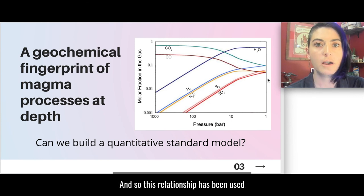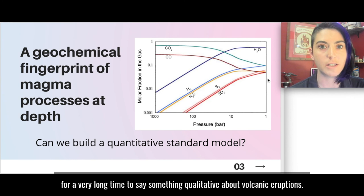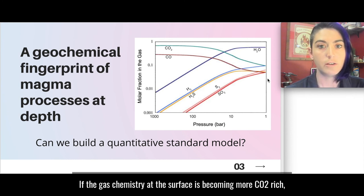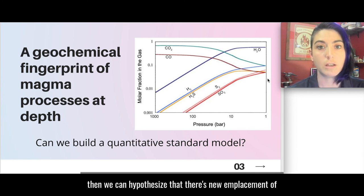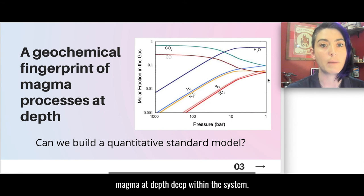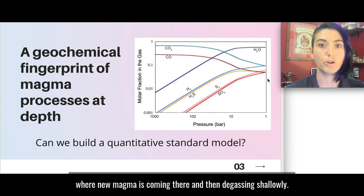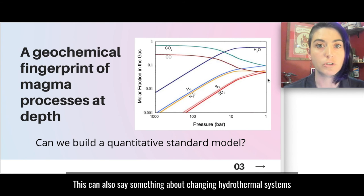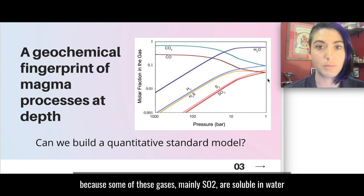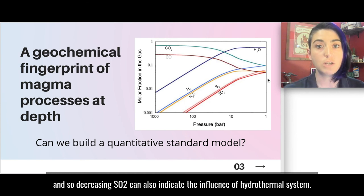And so this relationship has been used for a very long time to say something qualitative about volcanic eruptions. If the gas chemistry at the surface is becoming more CO2 rich then we can hypothesize that there's new emplacement of magma at depth deep within the system. Conversely if our SO2 to CO2 ratio is increasing we can say that we might be seeing some kind of infiltration of magma into the shallow system where new magma is coming there and then degassing shallowly. Now this can also say something about changing hydrothermal systems because some of these gases, namely SO2, are soluble in water and so a decrease in SO2 can also indicate the influence of a hydrothermal system.